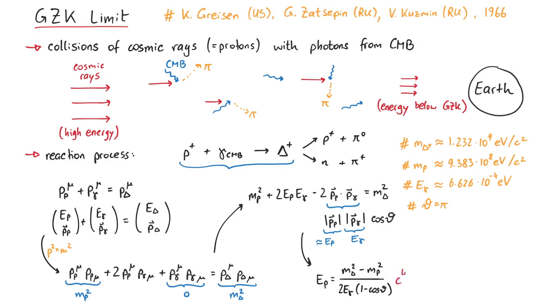Finally, we have to include the speed of light to the power of 4 in order for the units to be correct, which yields a minimal energy of around 2.4 times 10 to the power of 20 eV.